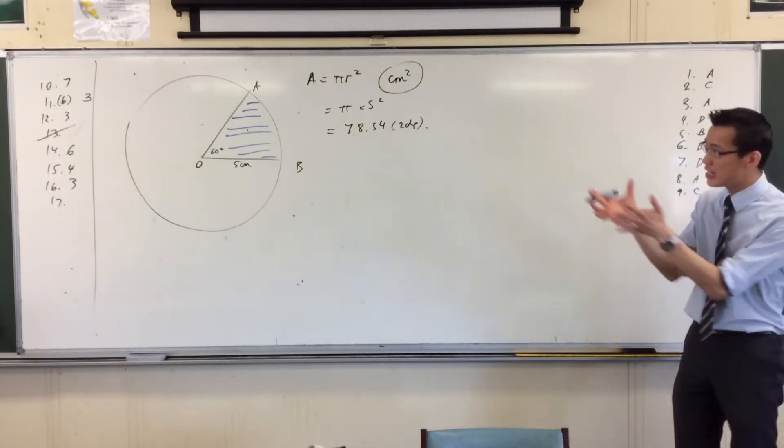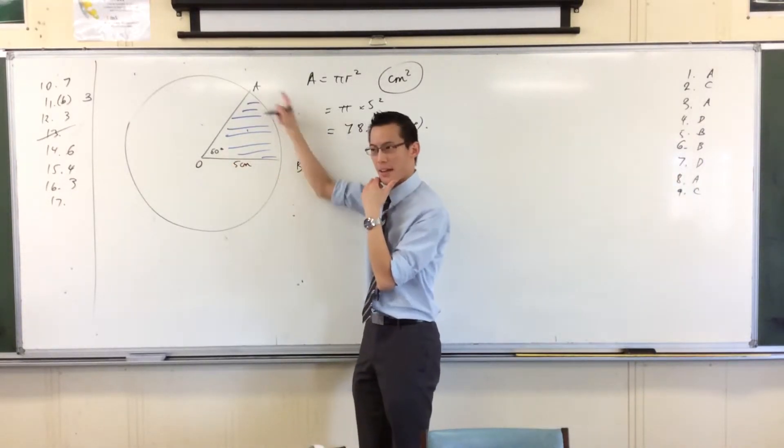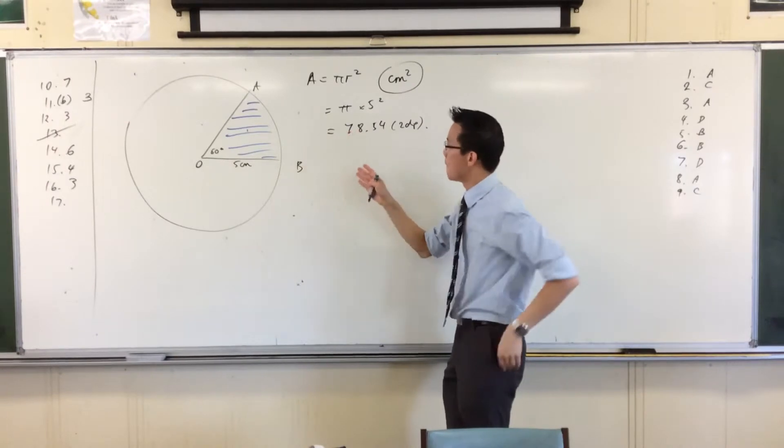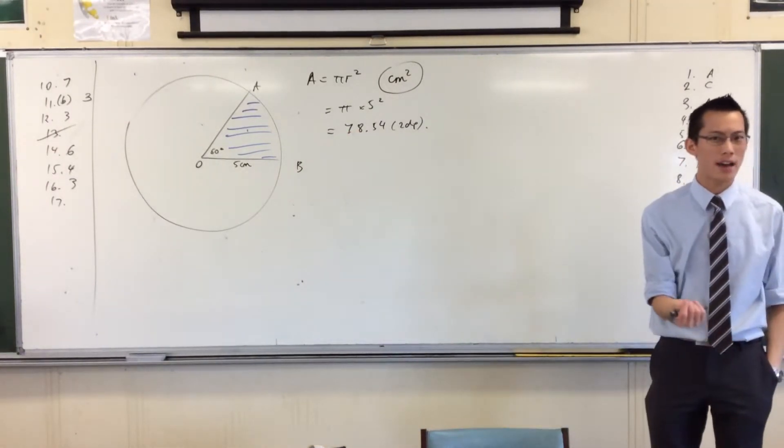Now we just want this little sector. And if you might recall, this part of it, like a pizza slice, it's called a sector. So we just want the sector. How much of the circle is shaded? Is part of that sector?